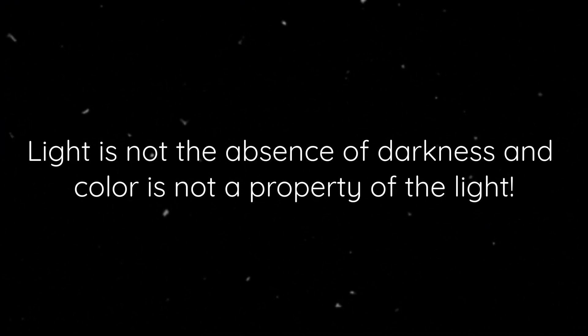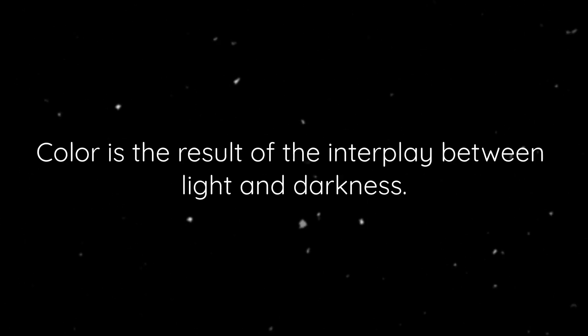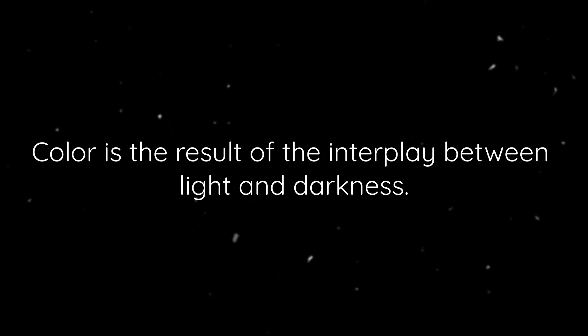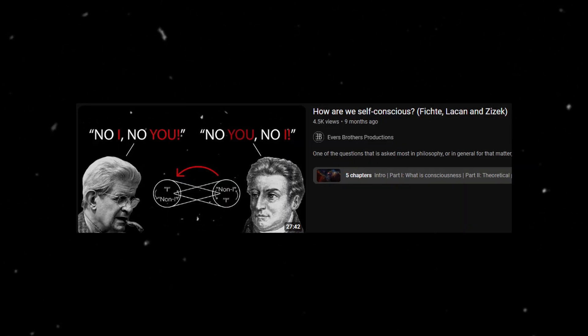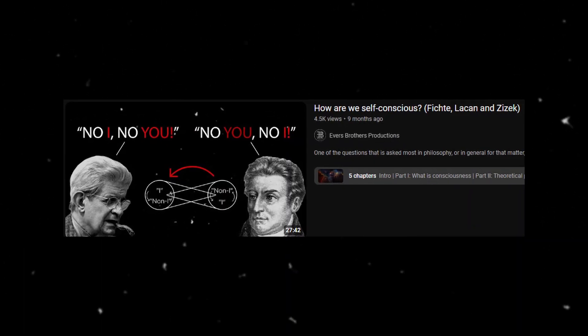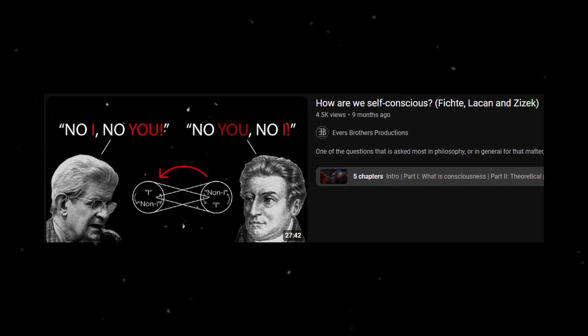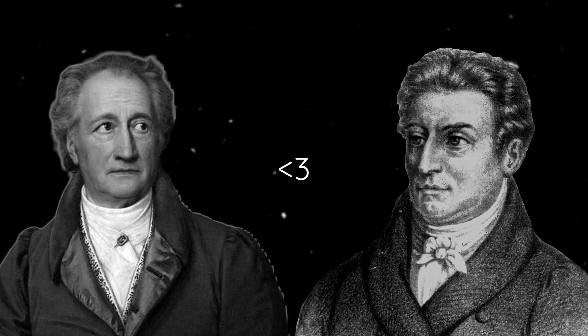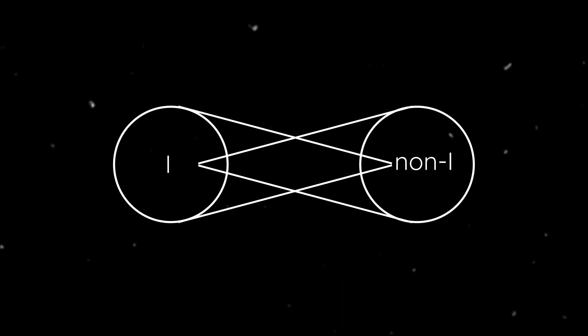Based on these experiments, Goethe concluded that light is not the absence of darkness and that color is not a property of light, but rather, contrary to Newton, that color is the result of the interplay between light and darkness as observed by the subject. We can see here the echoes of the reciprocal determination of Fichte. Which is not that surprising since Fichte and Goethe knew each other very closely.